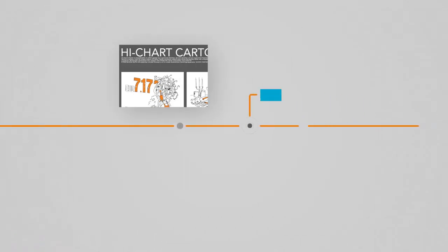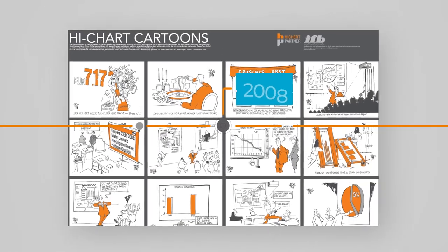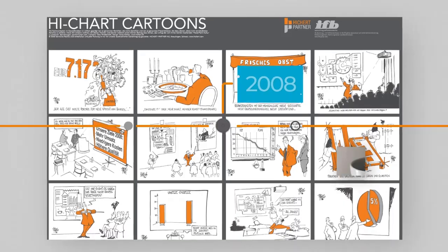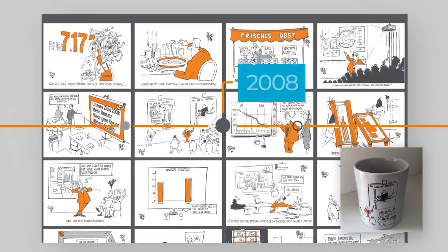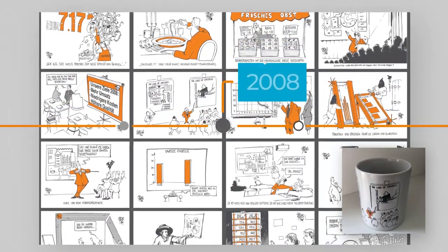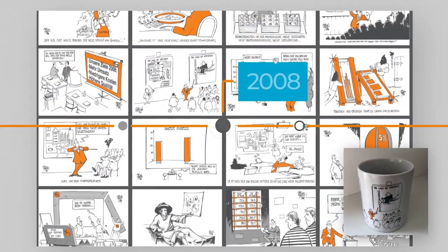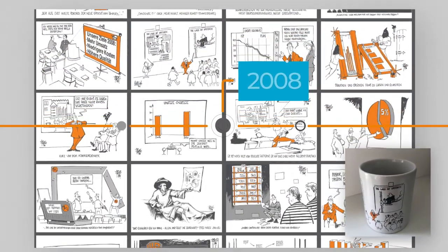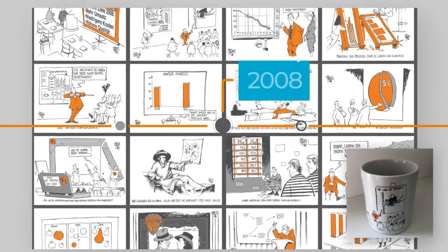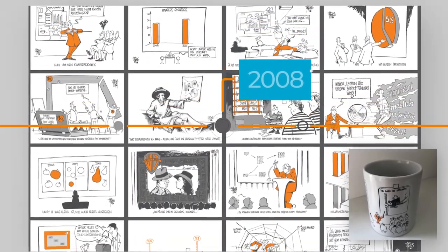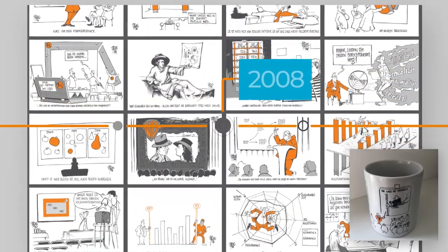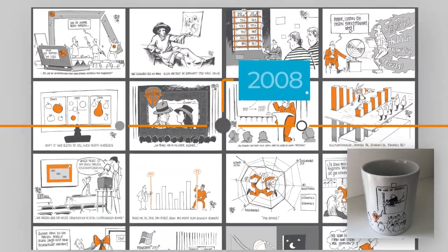Another idea for visualizing the SUCCESS rules was a series of cartoons developed together with Götz Wiedenroth. There was even a Hichert cartoons poster.